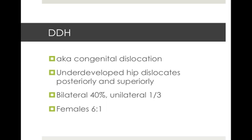Firstly, we'll talk about developmental dysplasia of the hip, also known as congenital dislocation. In young babies the hip will dislocate posteriorly and superiorly. Interestingly it's more common bilaterally and only unilateral in a third of cases, and females are highly predisposed at a ratio of six to one.